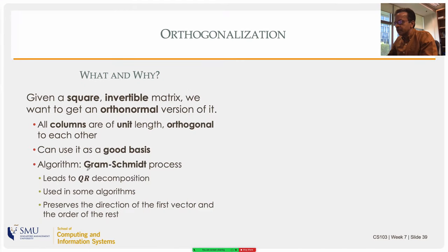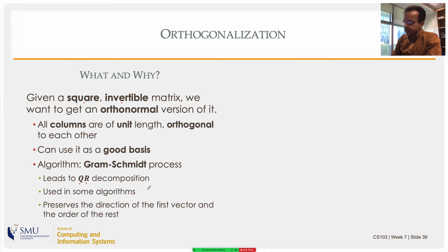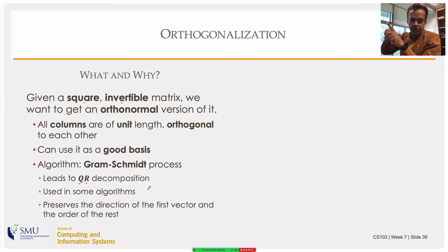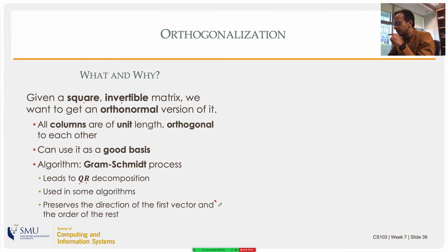The algorithm to achieve this is called Gram-Schmidt, producing the Q matrix. Starting from a square invertible matrix A, the process preserves the direction of the first column. It is a column-wise operation: the first column of Q is in the same direction as the first column of A, and the relative orientation (e.g., clockwise arrangement) is preserved throughout.